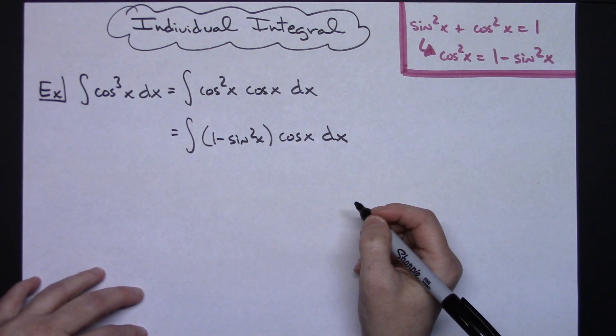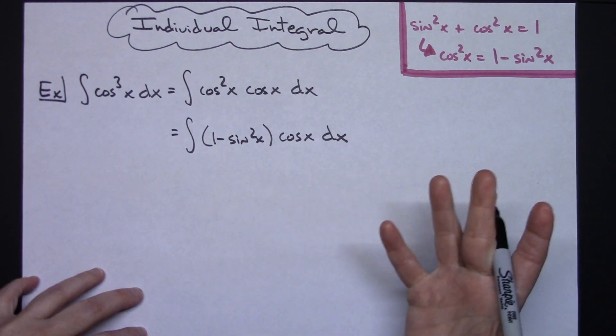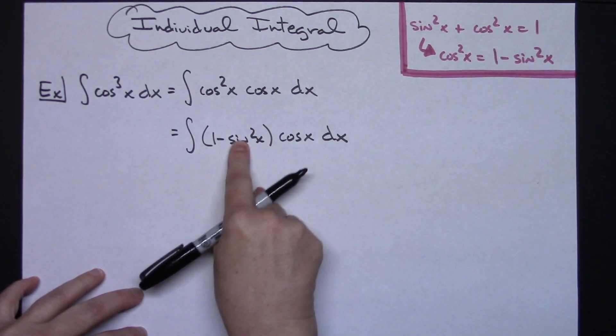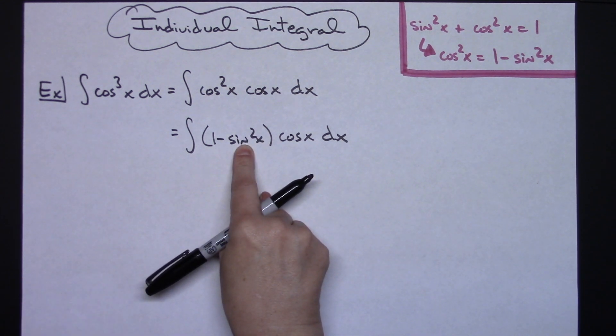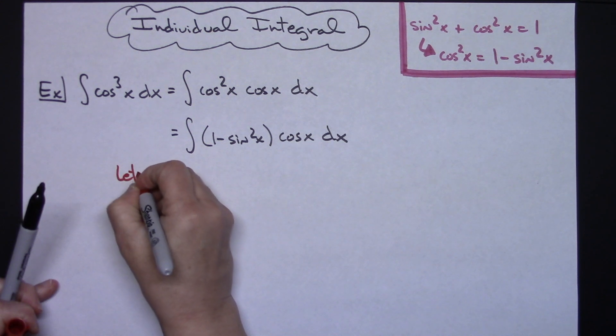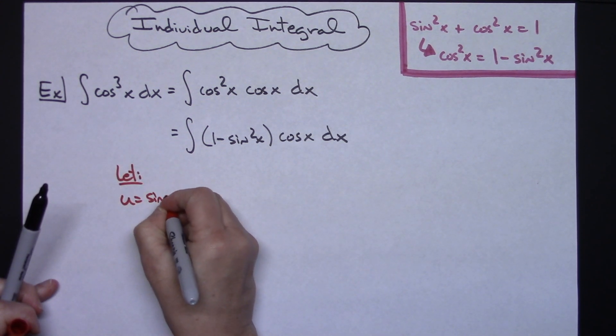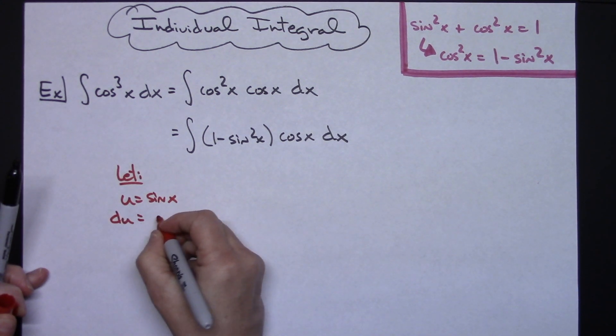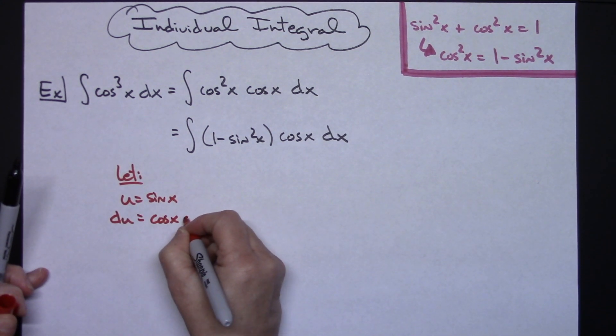Now at this point I'm going to do a straight u substitution. Right here I've got a sine squared x so I can let my u just be sine x. So I'm going to let u equal sine x. Taking the derivative of both sides, I'll have du is equal to cosine x dx.